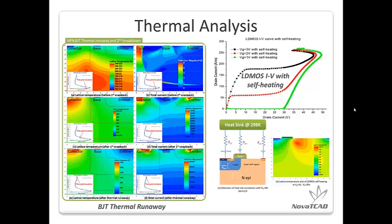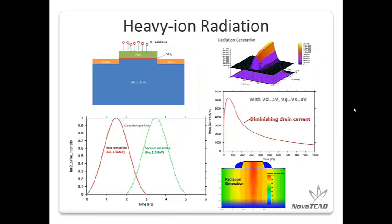This slide shows the thermal analysis of a BJT second breakdown. On the right side, we have LDMOS IV curves with self-heating. In heavy ion radiation simulation, heavy ions such as gold can strike and penetrate the device. Two heavy ions strike with Gaussian intensity profiles at different times, penetrating through the poly gates, oxide, and silicon body of the simulated MOSFET structure. The device is originally biased to 5 volts on the drain with source, gate, and body grounded. Upon strike, a surge of leakage current is observed, which gradually diminishes after the strikes are over.